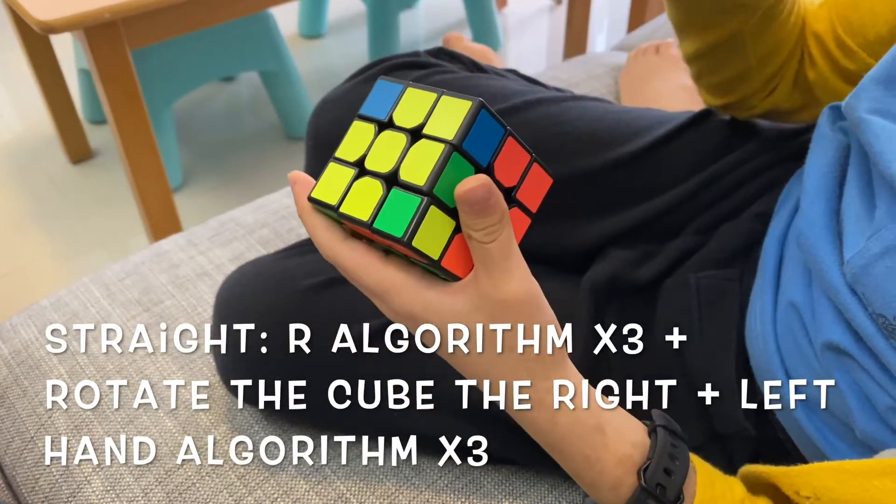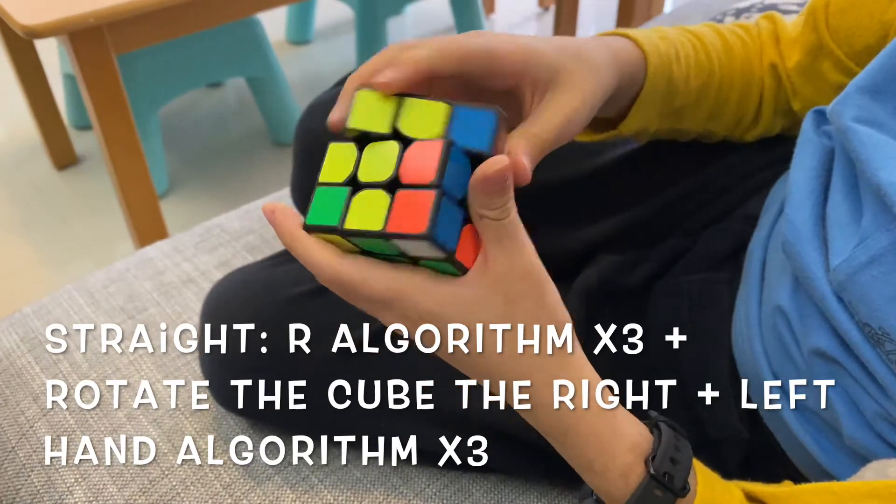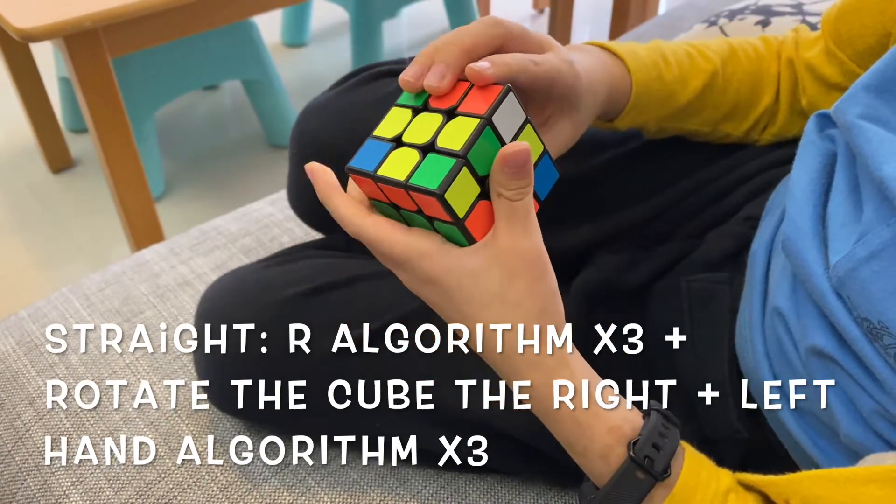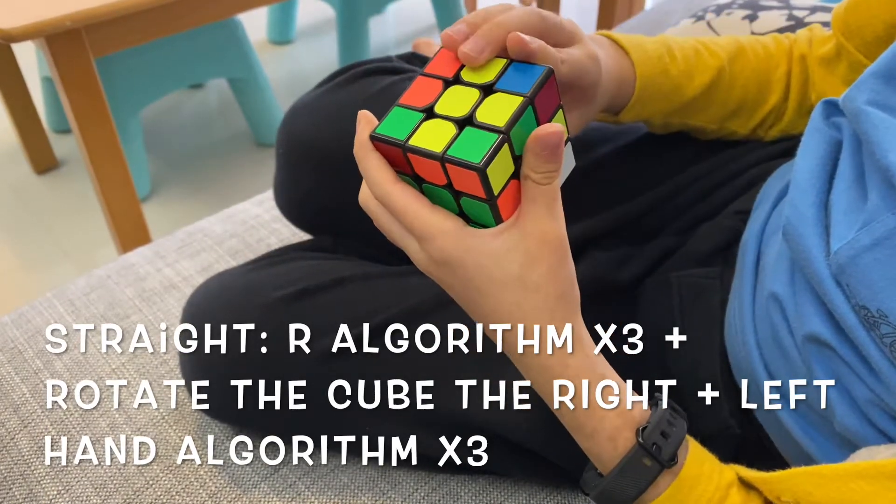So you do the right hand algorithm 3 times now. One, two, three, four. Done. One, two, three, four. Yes.